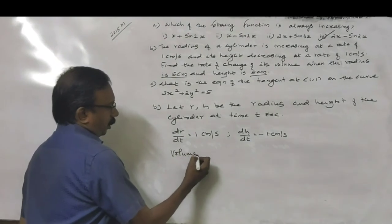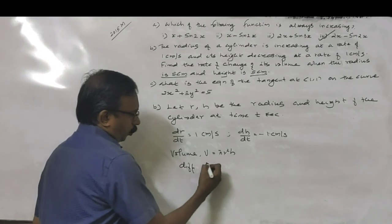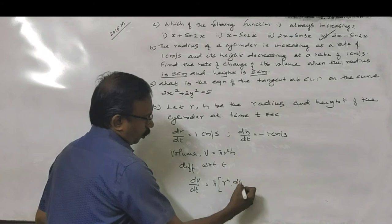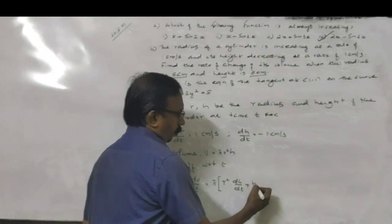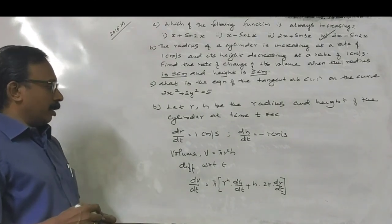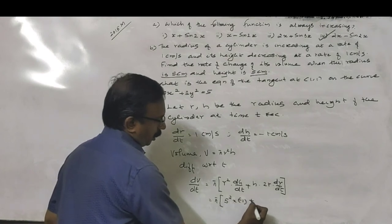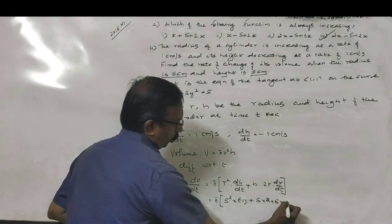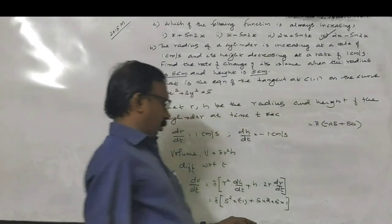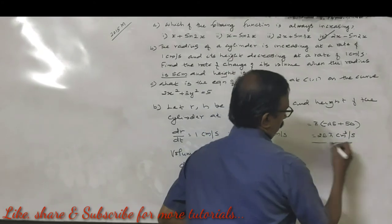Volume V equals π r² h. Differentiating with respect to t: dV/dt equals π times [r² times dh/dt plus h times 2r times dr/dt]. Applying the values: r equals 5, h equals 5, dh/dt equals minus 1, dr/dt equals 1. So dV/dt equals π times [25 times (minus 1) plus 5 times 2 times 5 times 1] equals π times [minus 25 plus 50] equals 25π cubic centimetres per second.